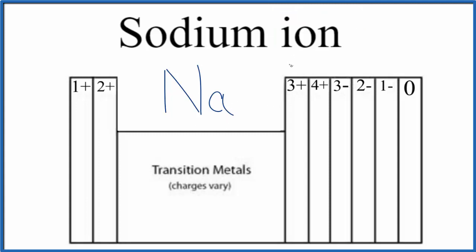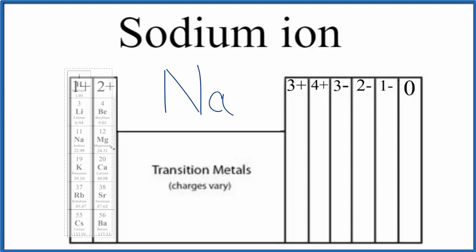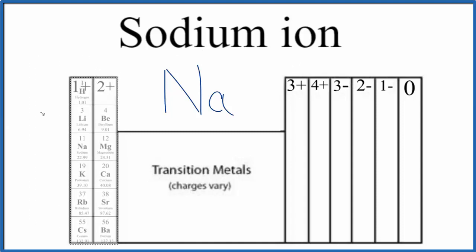So to figure this out, we look at sodium on the periodic table. It's in group one. Elements in group one, they all have a one plus ionic charge. When they form ions, they form one plus ions.